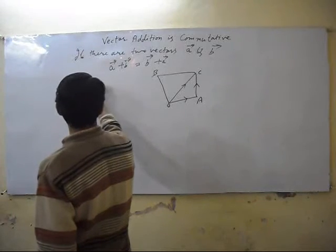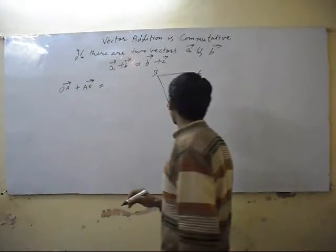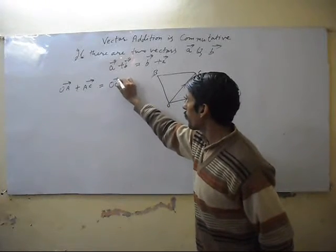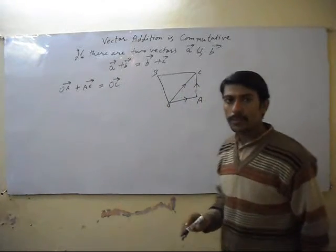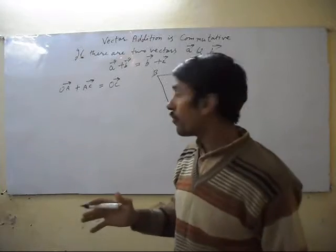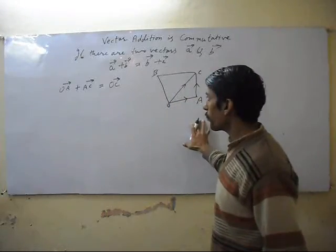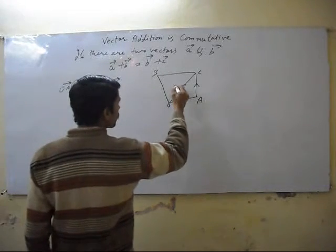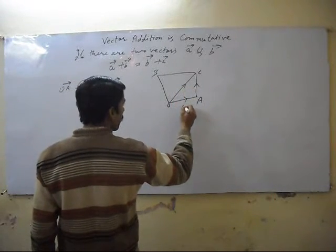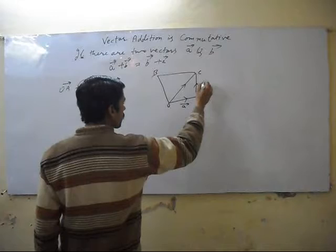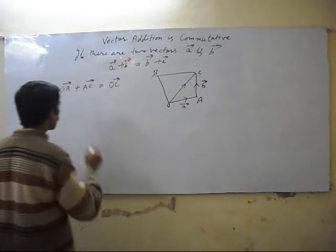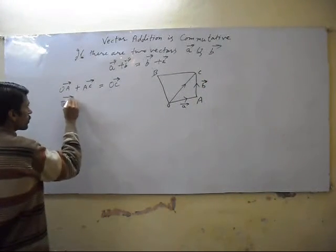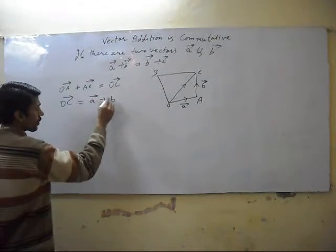is always equal to OC as per the triangle law of vector. It means this is A vector, this is B vector. OC always equals A vector plus B vector.